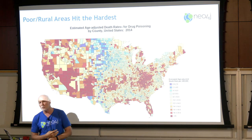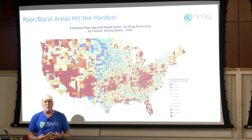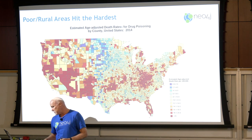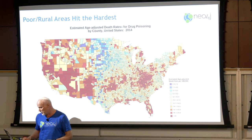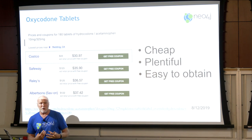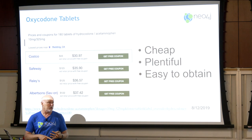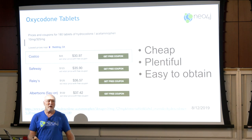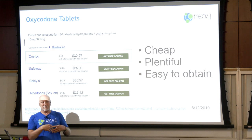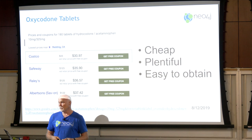It's basically a nationwide problem but primarily in rural areas. When it started, a lot of it had to do with OxyContin, Oxycodone, Hydrocodone, and variations on those. Purdue Pharma spent a lot of money telling doctors, 'By the way, it's not habit-forming, there's no problems giving this out to people.' And as late as 2018 they were still doing that, still pushing it to providers. It's cheap and easy to obtain — this is an actual screenshot from GoodRx from last week: 30 bucks to get 180 pills.